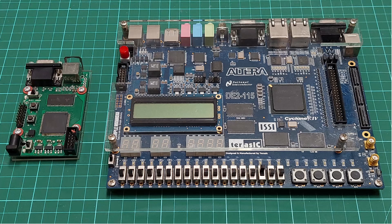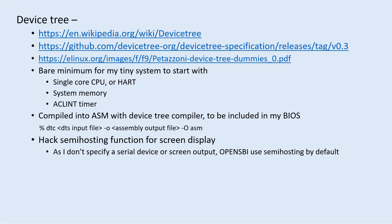Here's a photo of the two FPGA boards — the one on the left is my custom FPGA board and the one on the right is the off-the-shelf FPGA board. After basic configuration with my tiny BIOS, before we can start OpenSBI we need to set up a device tree called a Flattened Device Tree, or FDT. A few references for the device tree are given here.